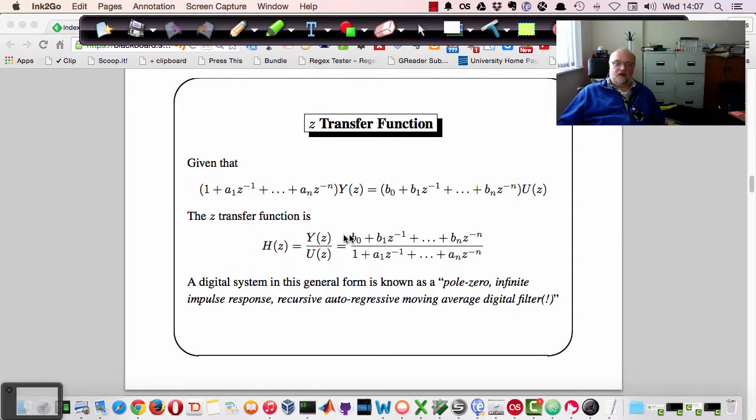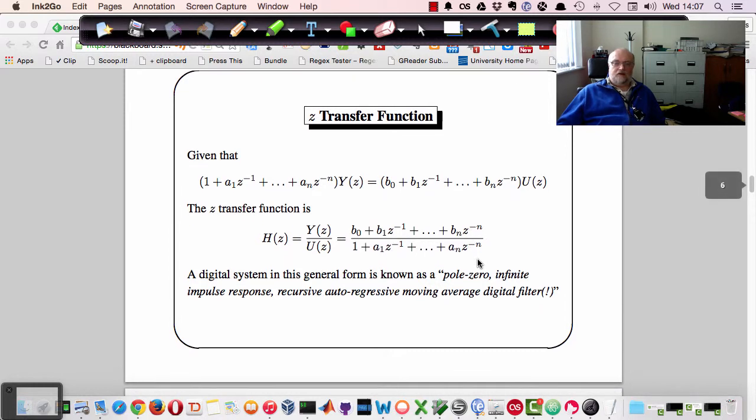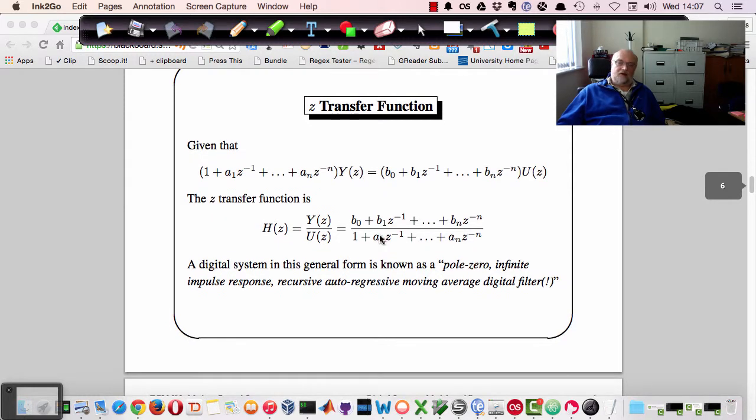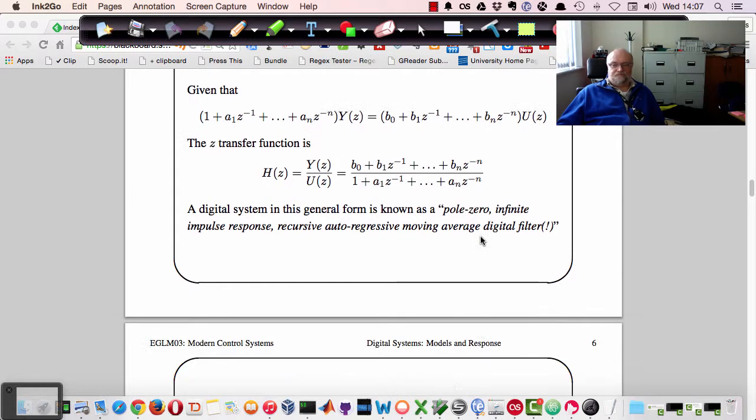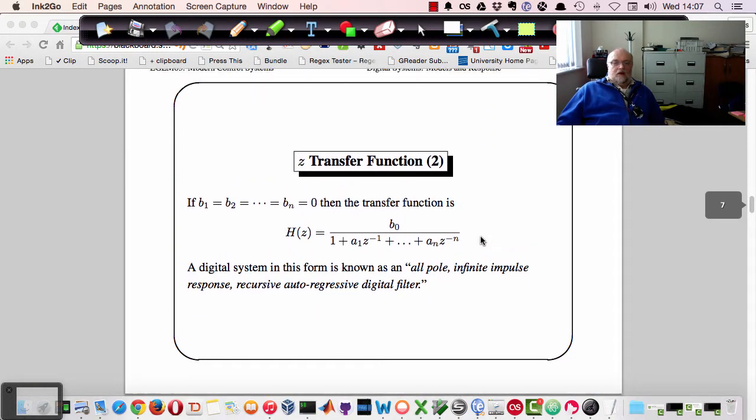And essentially it's a moving average digital filter, because in order to compute the next output from the inputs, we take account of sort of an average of the terms added together over a period of time given by the number of values we've got in the expression or the size of n.